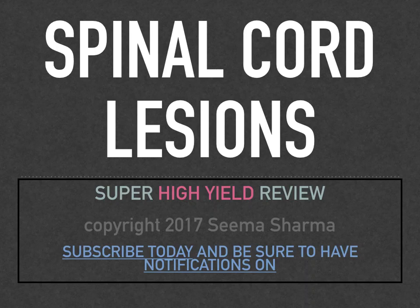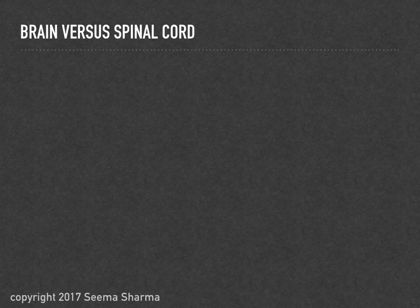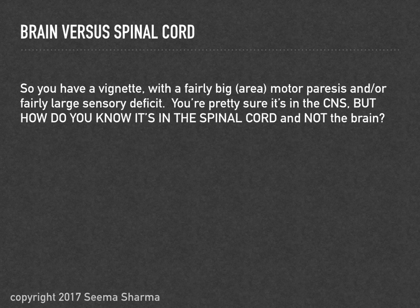Welcome to this video on spinal cord lesions — a high-yield review. When reading a vignette, if you see a fairly large area of motor paresis (not strictly myotomal) and/or a fairly large sensory deficit (not dermatomal), you're likely dealing with a CNS lesion. If paresis is present, it's never contralateral to the lesion — you can have ipsilateral or bilateral paresis, but not contralateral.